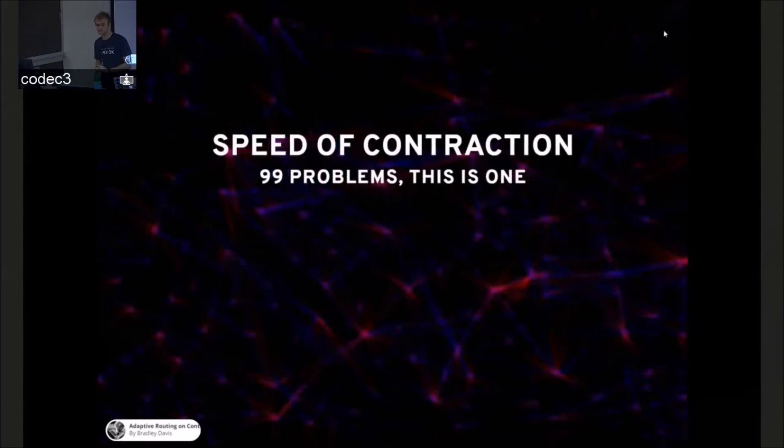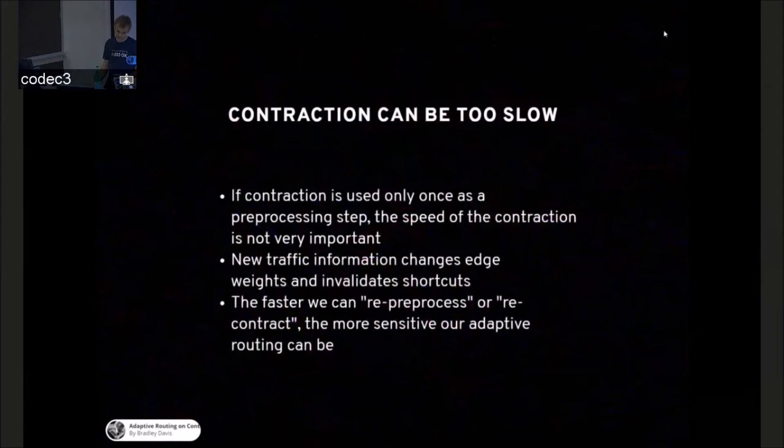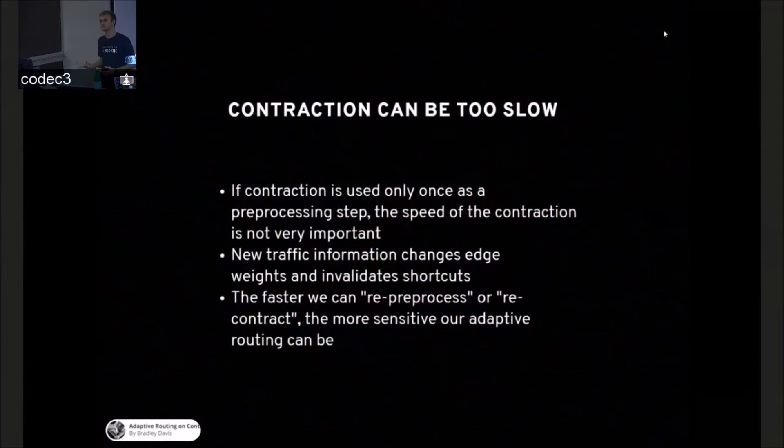So the speed of contraction is a problem if I want to do adaptive routing. It can be slow. If you're only going to do it once, that's fine. But new traffic information means new edge weights, which means invalid shortcuts. And so the faster we can re-pre-process, which is in fact not pre-processing at all, the more sensitive and more adaptable our adaptive routing can be.